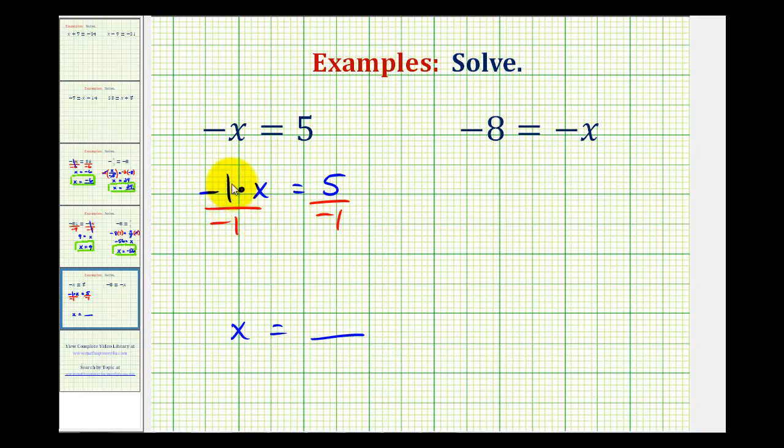On the left side, negative 1 divided by negative 1 would be 1, and 1 times x is just x. And on the right side, we have positive 5 divided by negative 1, which is equal to negative 5. So x equals negative 5 is our solution.